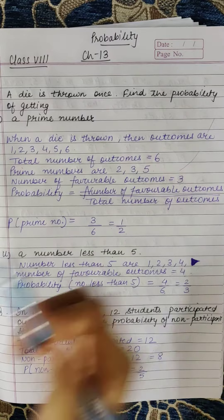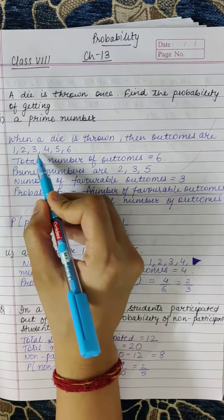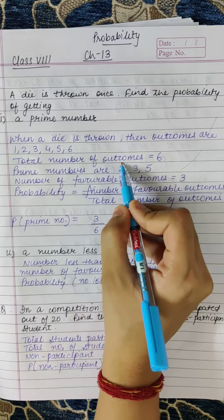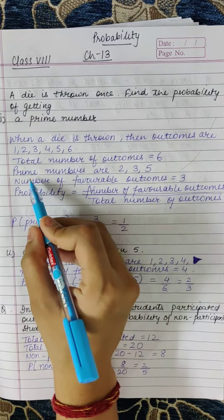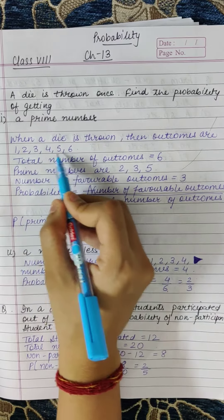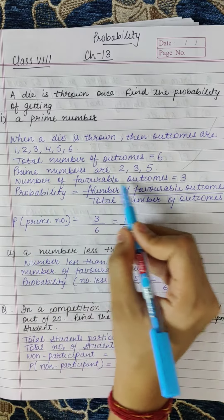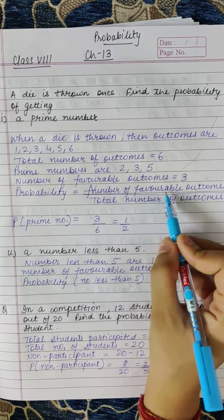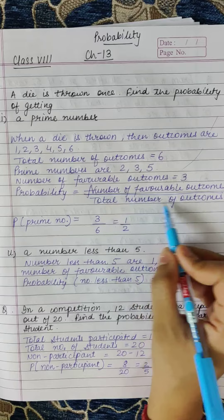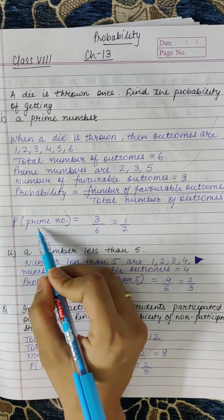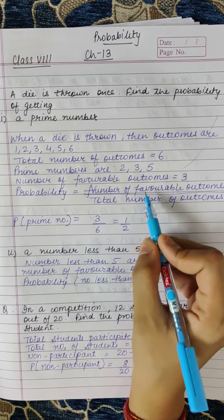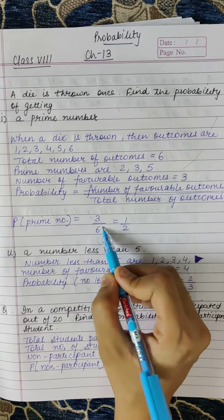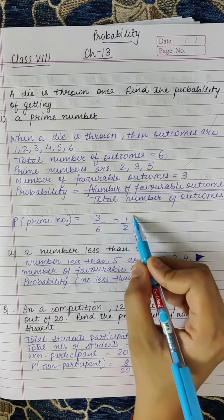When a die is thrown, the outcomes are 1, 2, 3, 4, 5, or 6. So the total number of outcomes is 6. Prime numbers are 2, 3, and 5, so the number of favourable outcomes is 3. Probability is number of favourable outcomes by total number of outcomes, so probability of getting a prime number is 3 by 6, which equals 1 by 2.